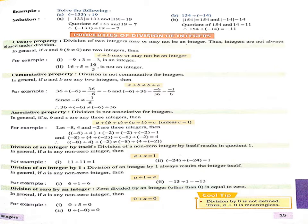Now next property: division of an integer by itself. Division of a non-zero integer by itself results in quotient 1. अगर हम किसी integer को उसी से ही divide करते हैं तो हमारा जो result आएगा वो हमेशा 1 आएगा। Here are two examples: 11 divided by 11 equals 1. Similarly, minus 24 divided by minus 24 — our answer is also 1.